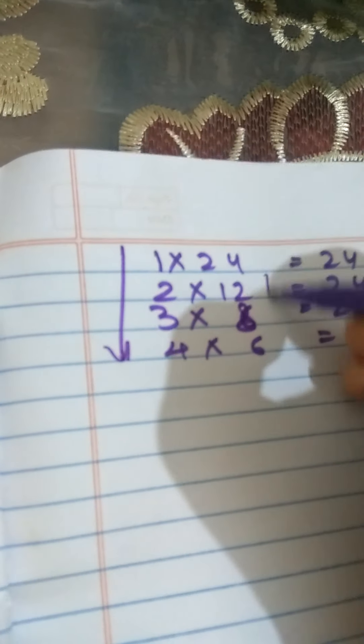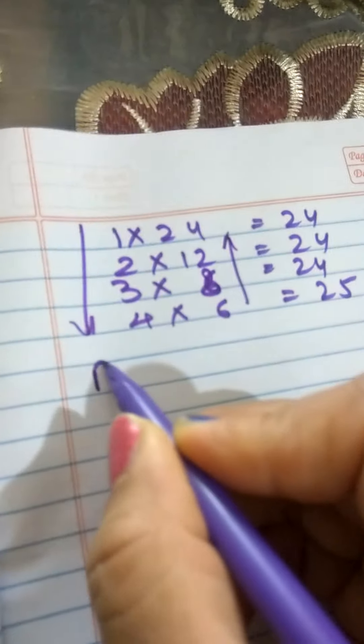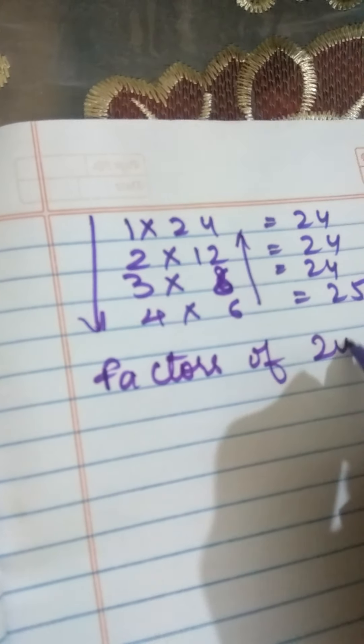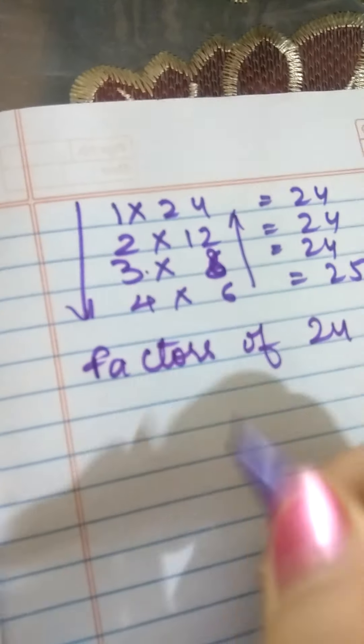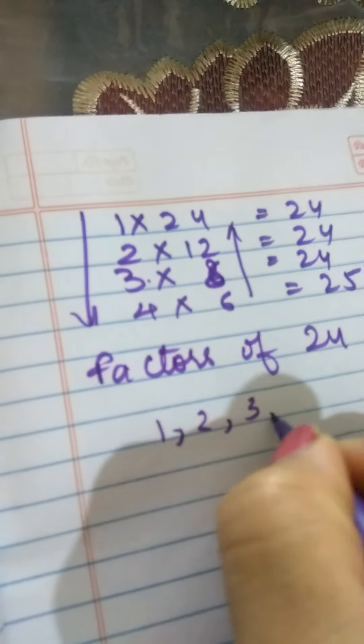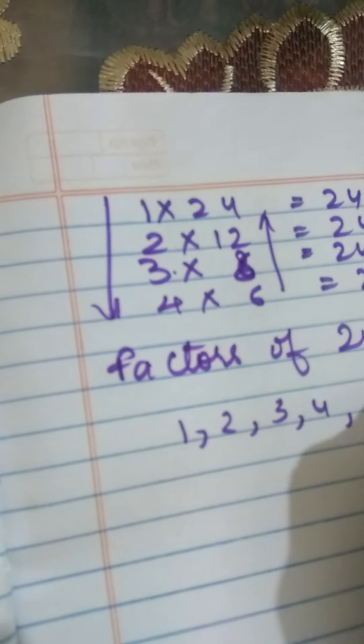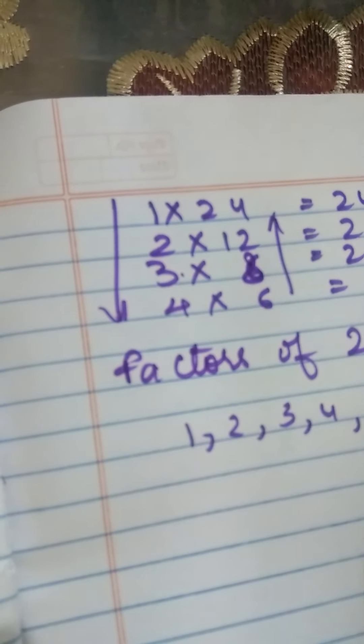Now from here to here and then from here to here. I will write the factors of 24 are 1, 2, 3, 4 then 6, 8, 12, 24.